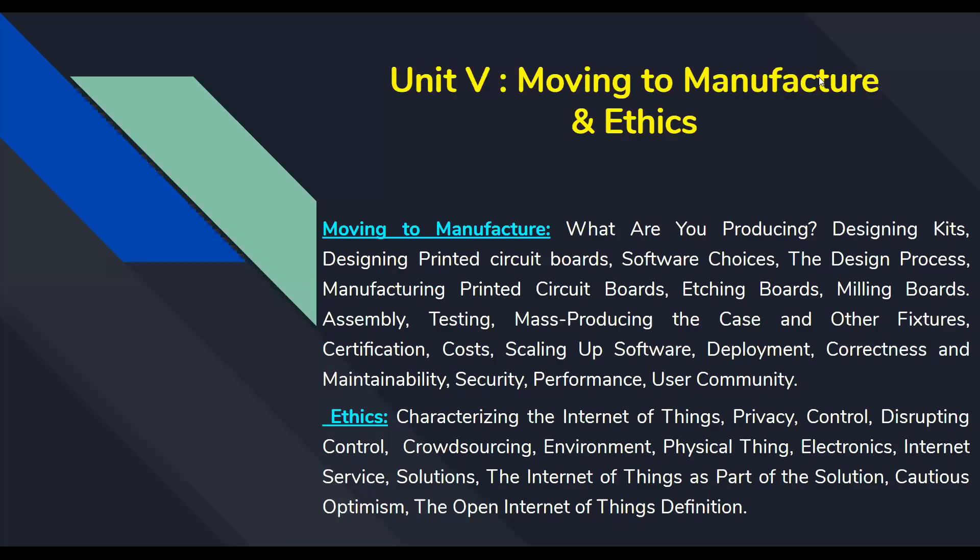Good morning everyone. We are going to start with Chapter 10 of Unit 5: Moving to Manufacture. The topics we are going to look into are: what are you producing, designing kits, designing PCBs, software choices, the design process, manufacturing PCBs, etching boards, milling boards, assembling, testing, mass producing the case and other fixtures, certification, cost, scaling up the software, deployment, correctness, maintainability, security, performance, and user community.